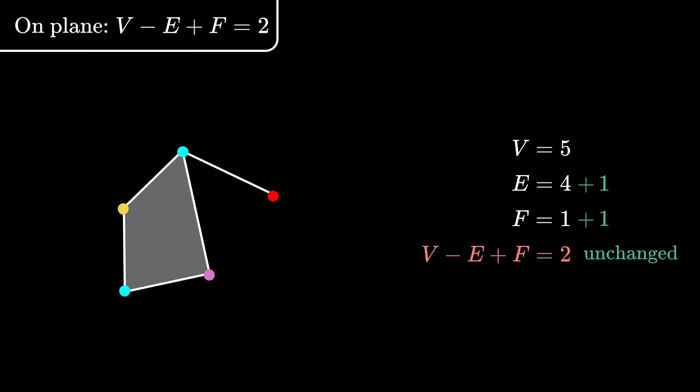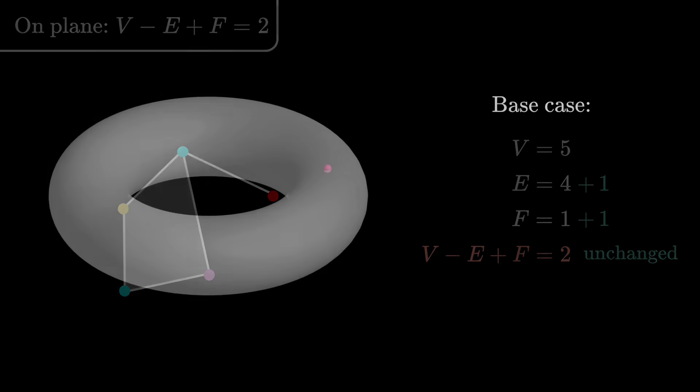Does this kind of argument extend to the torus? Well, the base case is still exactly the same. There is only one vertex, so V equals 1. There are no edges yet, so E is 0, and the whole torus is not separated by edges yet, so there is one continuous region, and F is 1. So in the base case for the torus, V minus E plus F is still 2.